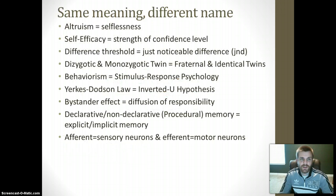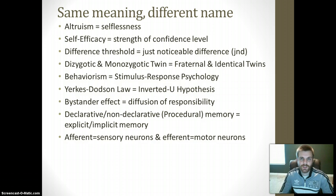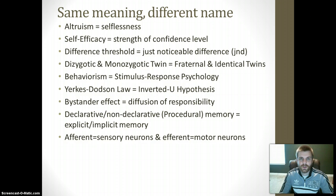I want to show you some terms that have the same meaning but may not be referred to the same way. There are a few different ways of referring to some of these things based on the textbook your AP Psychology class is using. For example, the Yerkes-Dodson Law is pretty common, but so is the inverted U hypothesis. It really depends on the author of your textbook and what they are using.